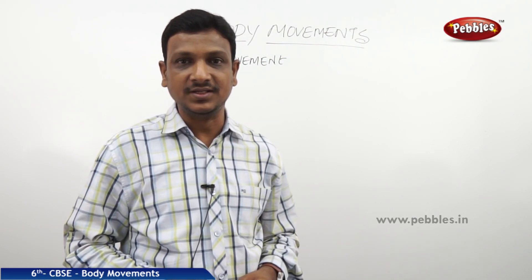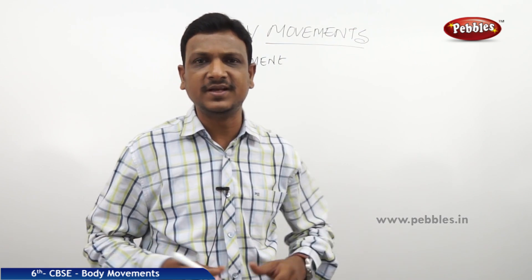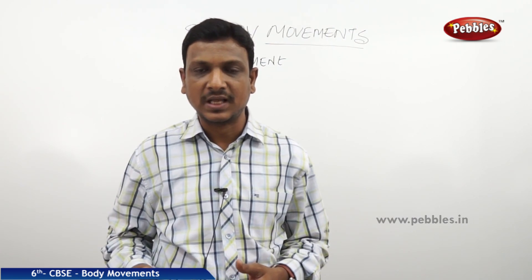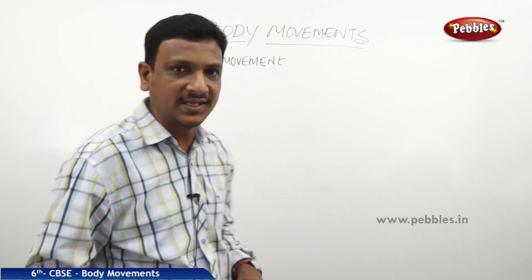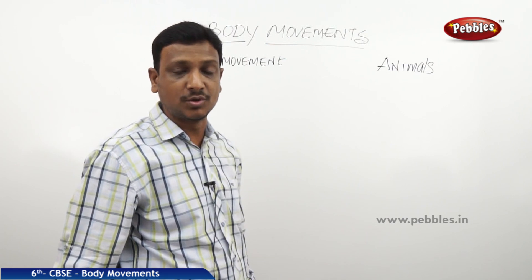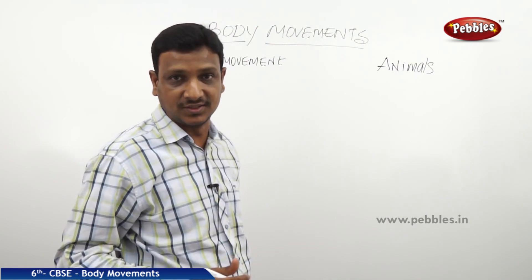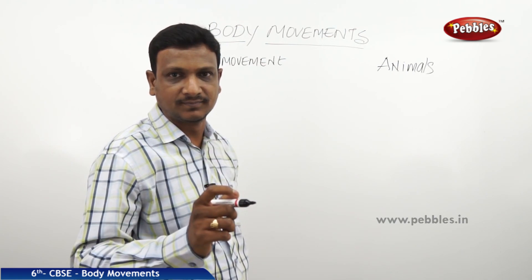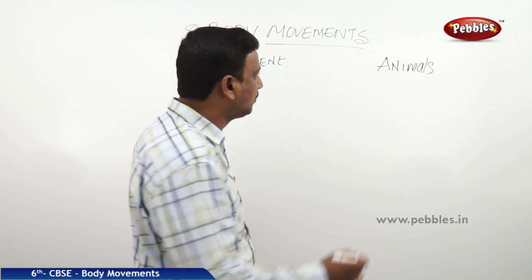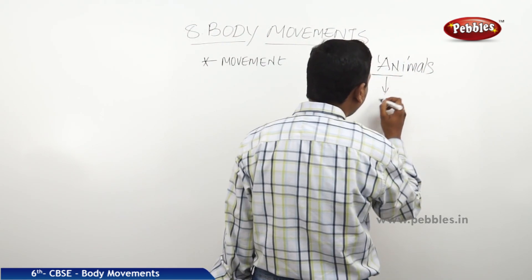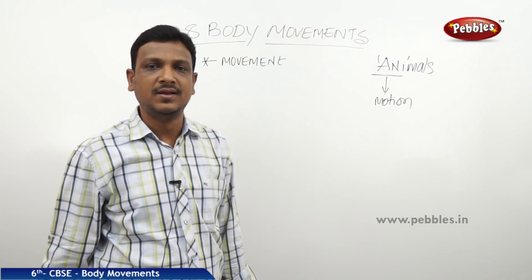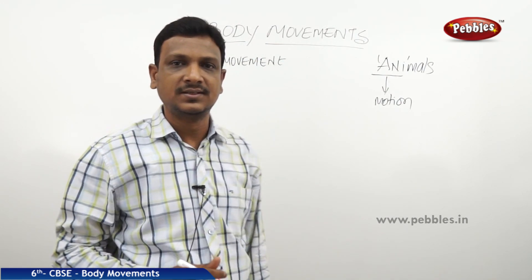Good morning children. Today our topic is body movements. Movements are very important for an animal. What is the link between an animal and movement? We are calling the organisms that can move from place to place 'animals,' and the organisms that are still, 'plants.' So we take one specific feature to distinguish between plant and animal — animals can move from place to place. The term 'animal' comes from 'anima,' meaning motion, movement, life. So movement is observed in living things at all levels.